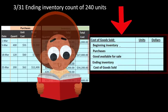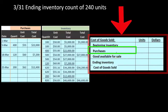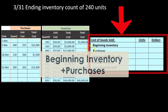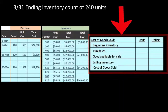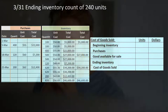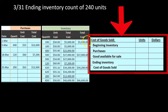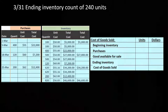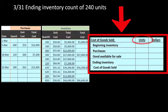A multiple-choice question might give any component as the unknown — beginning inventory, purchases, or ending inventory. You can write the formula as an algebraic equation: beginning inventory + purchases − ending inventory = cost of goods sold. As long as you have one unknown, you can solve for it. You don't need multiple equations — just this one. Also know the subtotal 'goods available for sale' by name, as some problems reference it directly.